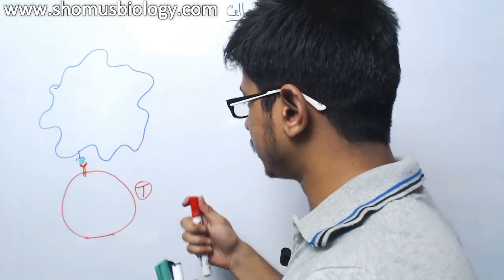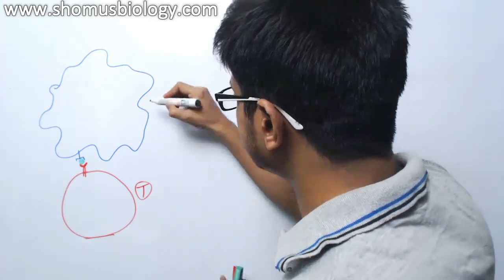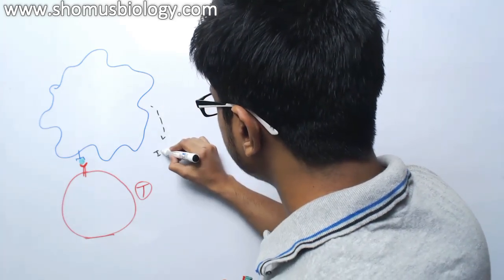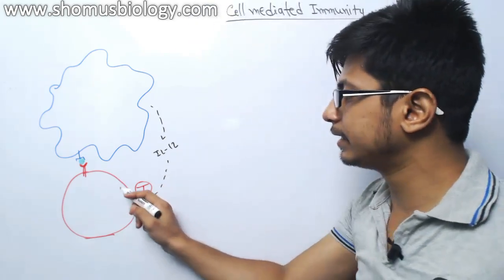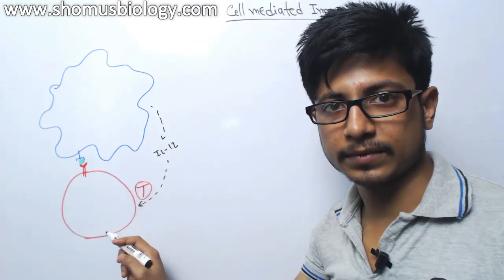Once the macrophage starts secreting interleukin-12, let me just draw it here, starts releasing IL-12. It will go and act on T-cell, this T-helper cell.